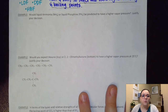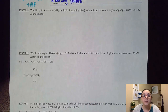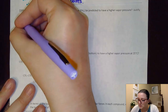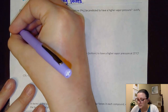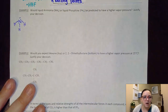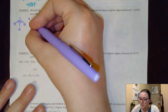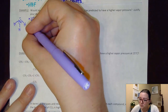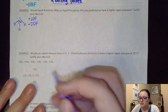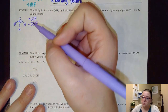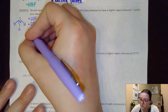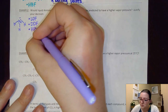Let's look at another one: would ammonia, NH₃, or liquid phosphine, PH₃, be predicted to have a higher vapor pressure? Justify your decision. For ammonia, NH₃ — it's covalent, so I would not be breaking bonds but rather IMFs. Being covalent, I would have London dispersion forces present. It's very polar, so I would have dipole-dipole forces present. And because I have hydrogen bonded to nitrogen, this could form hydrogen bonding intermolecular forces with another molecule. So I also have hydrogen bonding forces present.